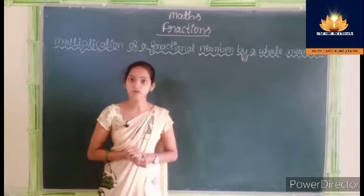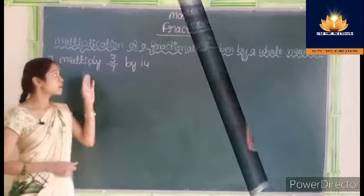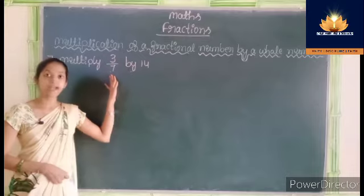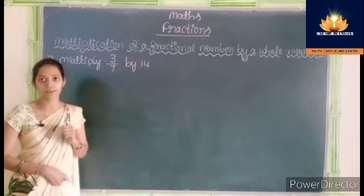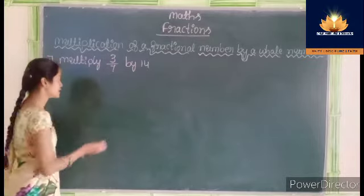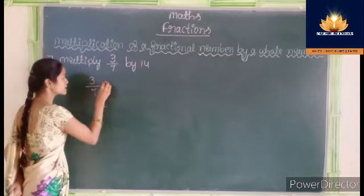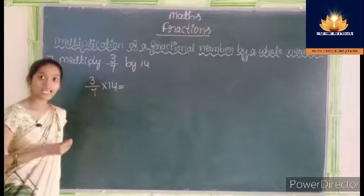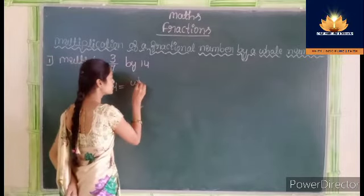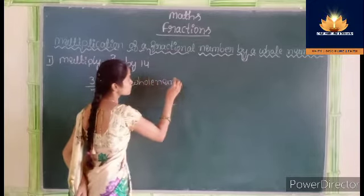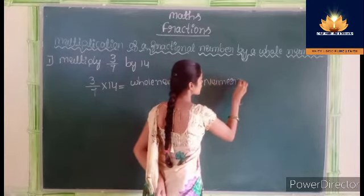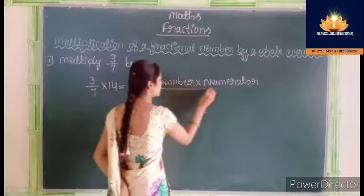Let us first learn multiplication of a fractional number by a whole number. Multiply 3 upon 7 by 14. Here 3 upon 7 is a fractional number and 14 is a whole number. That is 3 by 7 into 14. To multiply a fractional number by a whole number, there is a formula: whole number into numerator by denominator.